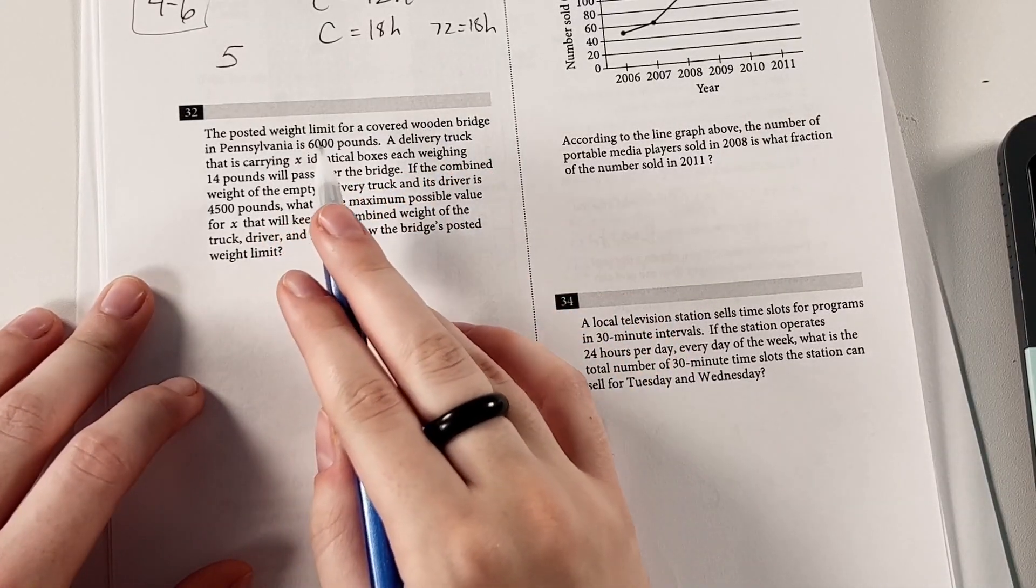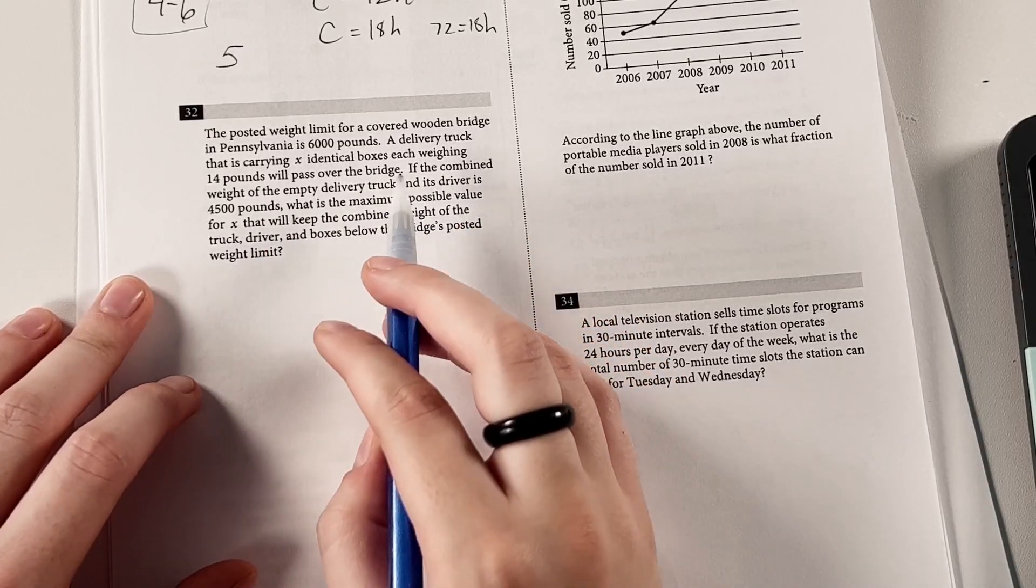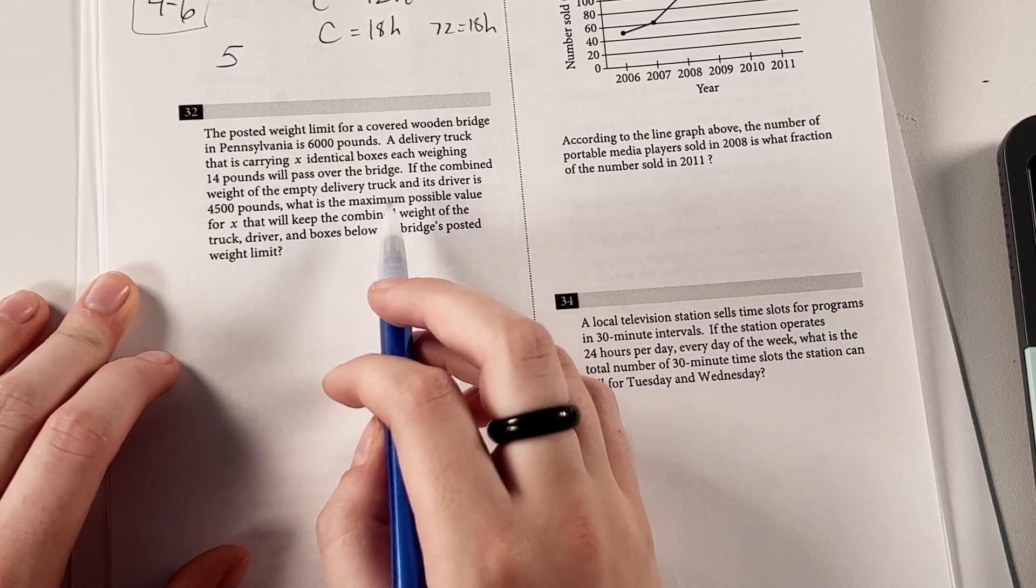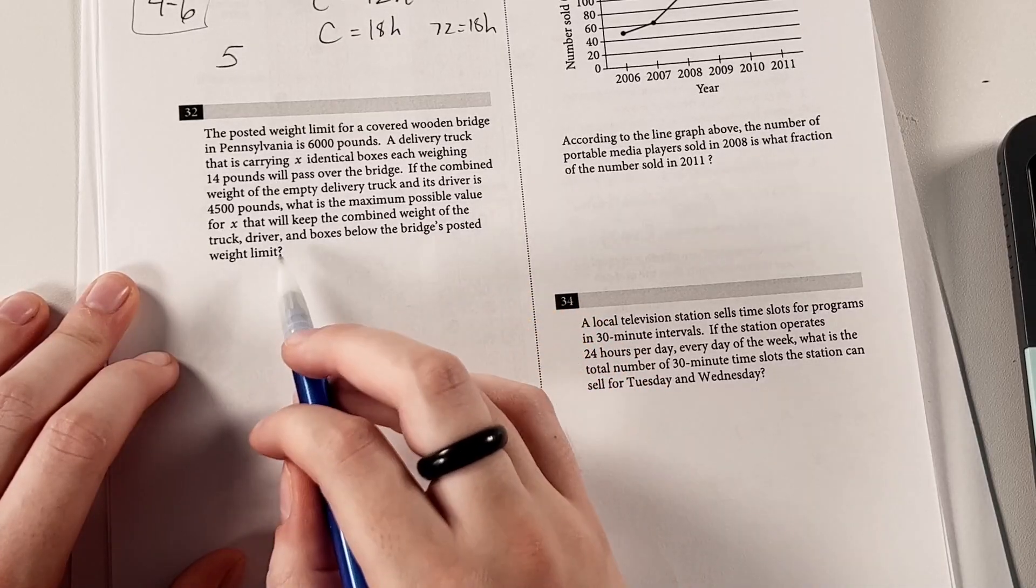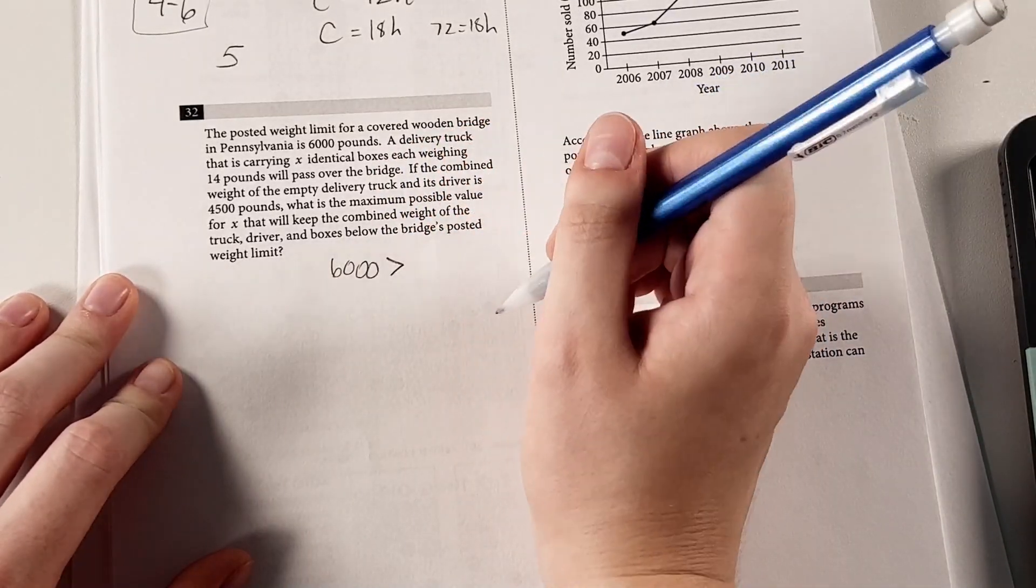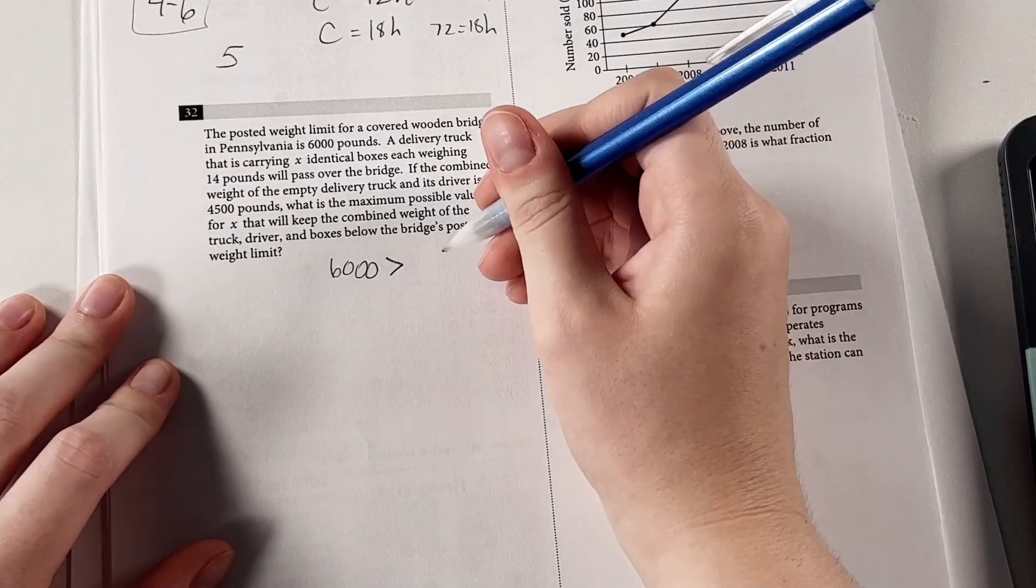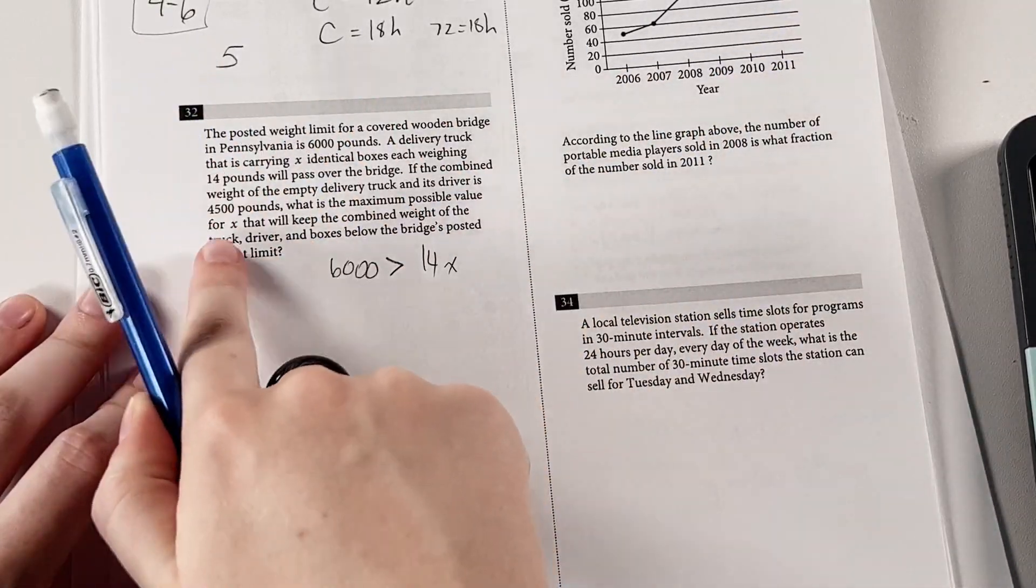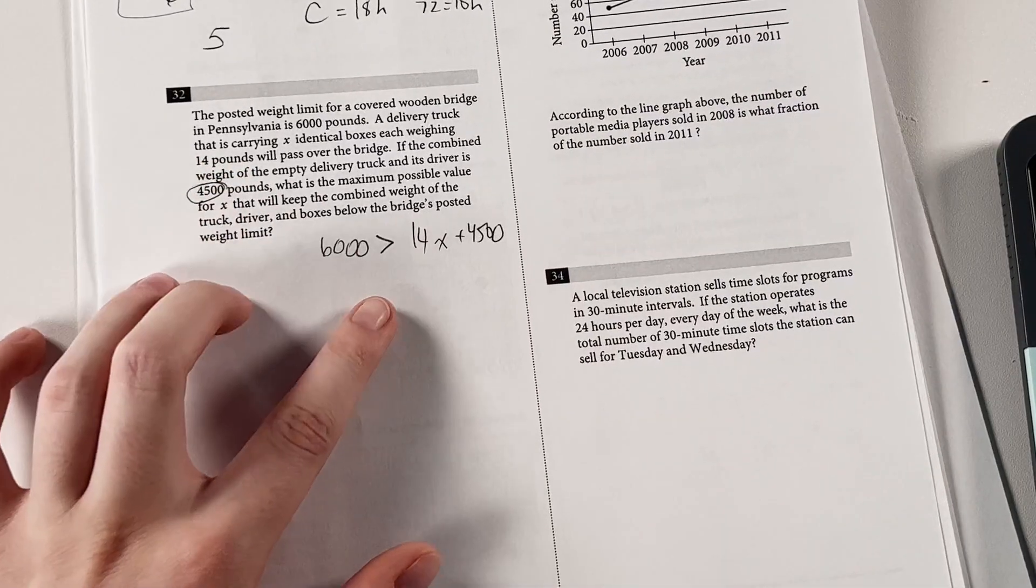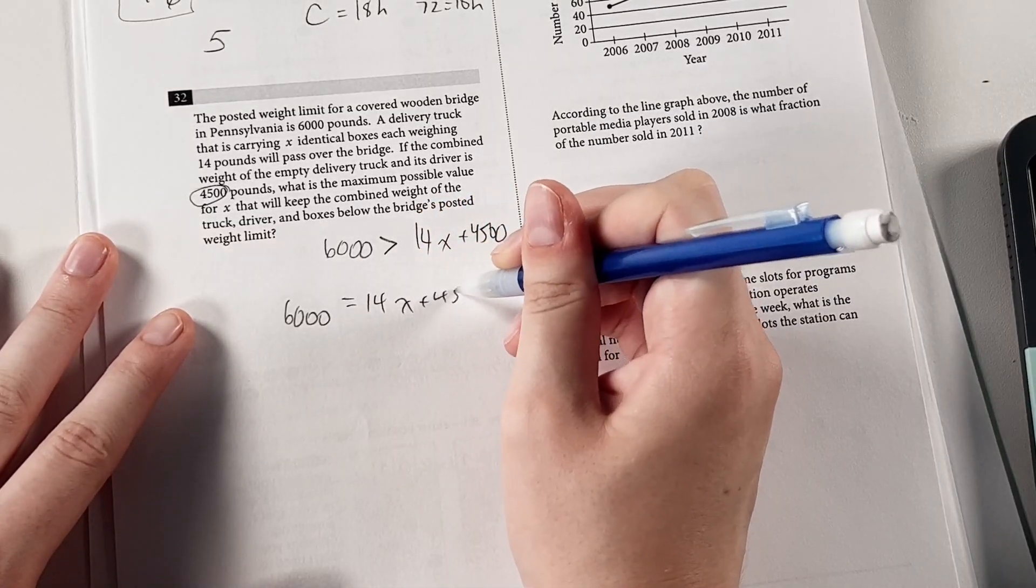The posted weight limit for a covered wooden bridge in Pennsylvania is 6,000 pounds. A delivery truck that is carrying x identical boxes, each weighing 14 pounds, will pass over the bridge. If the combined weight of the empty delivery truck and its driver is 4,500 pounds, what is the maximum value for x that will keep the combined weight of the truck, driver, and boxes below the bridge's posted weight limit. So that weight limit is 6,000. We want to be below that, and this is kind of just a y equals mx plus b, except it's an inequality instead of an equation. So we have all these boxes, they weigh 14 pounds each, and then we have the starting mass of the empty truck with just the driver in it. We want to find the value where it's just a little bit under 6,000 pounds. So for all intents and purposes, we can set these equal to each other and solve for x.